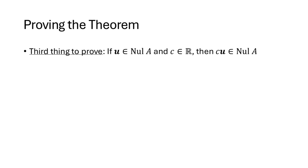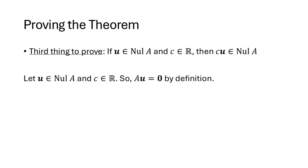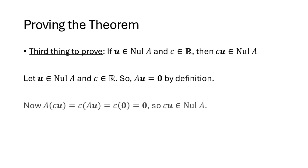Finally, we prove closure under scalar multiplication. Let u be a vector in the null space of A and let c be a scalar. Since u is in the null space, Au = 0. We compute A times cu: A(cu) = c(Au), by the compatibility property, and since Au = 0, we get c times 0 = 0. Since A times cu equals the zero vector, cu is in the null space of A.